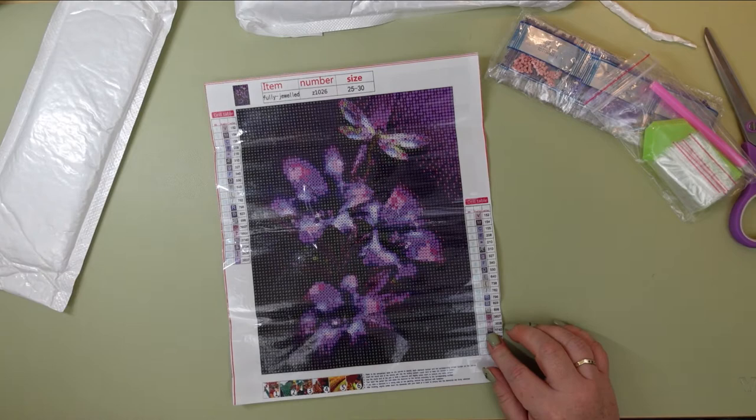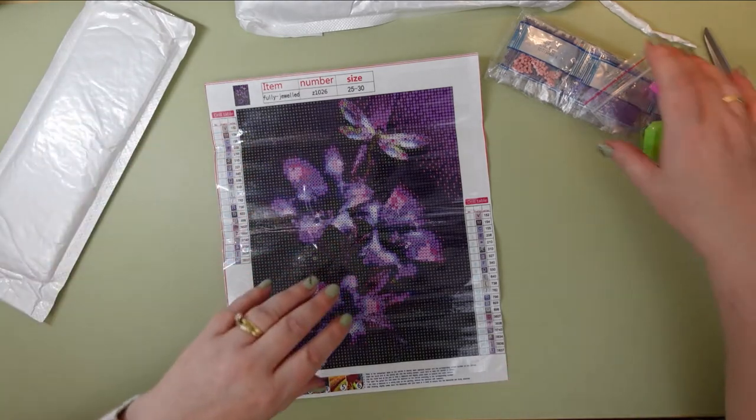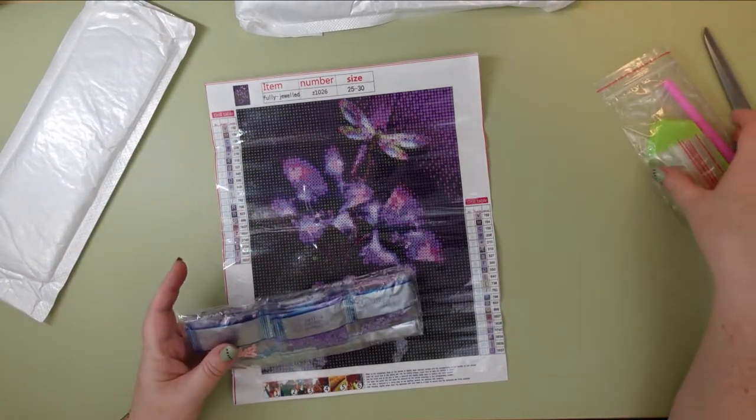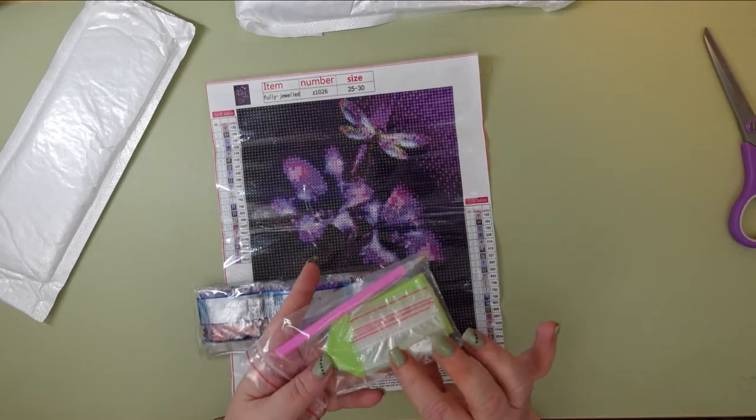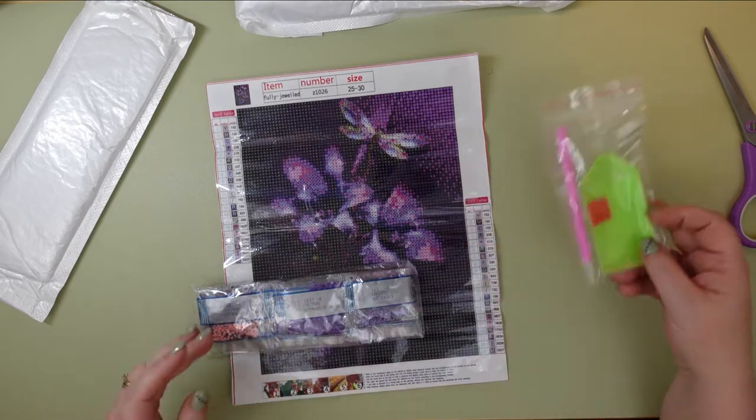So this one's laying pretty good. There is the thumbnail and hopefully that kind of gives you a bit of an idea. The flowers kind of look like they have a glow around them and then the rest of it is dark. So I looked at it and I thought it looked nice. It's a 25 by 30. And what is this one? Let's take a look. Oh, it's a round drill. And you get your basic kit. The only difference is they do send you a couple of baggies.